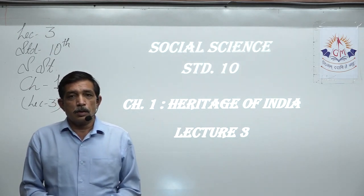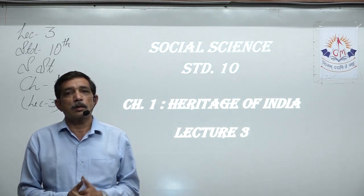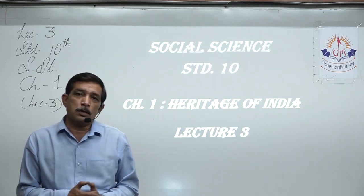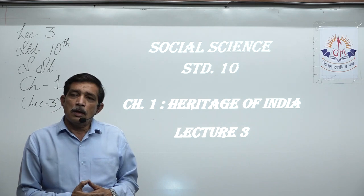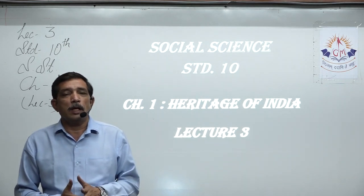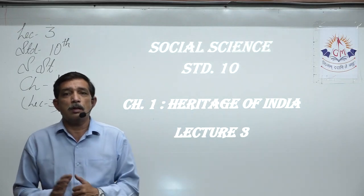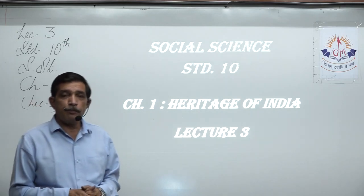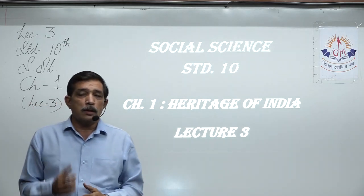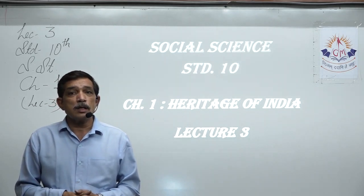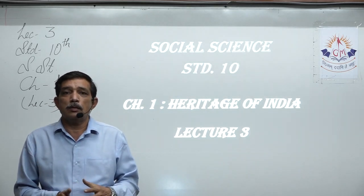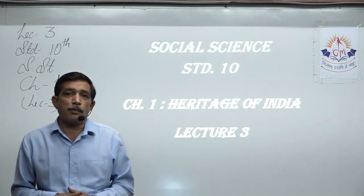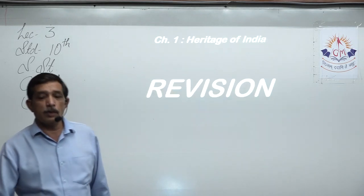In the first lecture we learnt about the complete layout of the Social Science material. It is divided into Term 1 and Term 2. Term 1 will have 11 chapters of History, Geography, Economics and Civics. Some 10 chapters are kept in the second term. Then we started with the understanding of chapter number 1. In lecture number 2 we carried on with the understanding. Let us take a quick recap of what we have learnt so far in the previous two lectures.